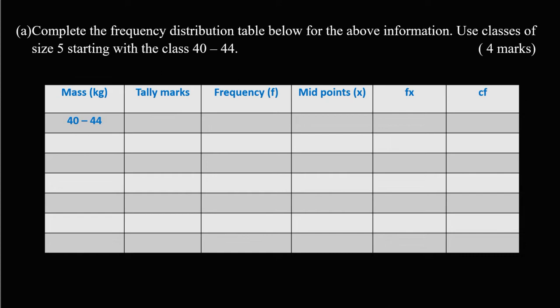We need to fill up the classes by adding 5 each time: 40 plus 5 is 45, then 45 plus 5 is 50, then 50 plus 5 is 55, 55 plus 5 is 60, 60 plus 5 is 65, and 65 plus 5 is 70. On the upper boundaries: 44, then 44 plus 5 is 49, 49 plus 5 is 54, 54 plus 5 is 59, 59 plus 5 is 64, 64 plus 5 is 69, and finally 74.